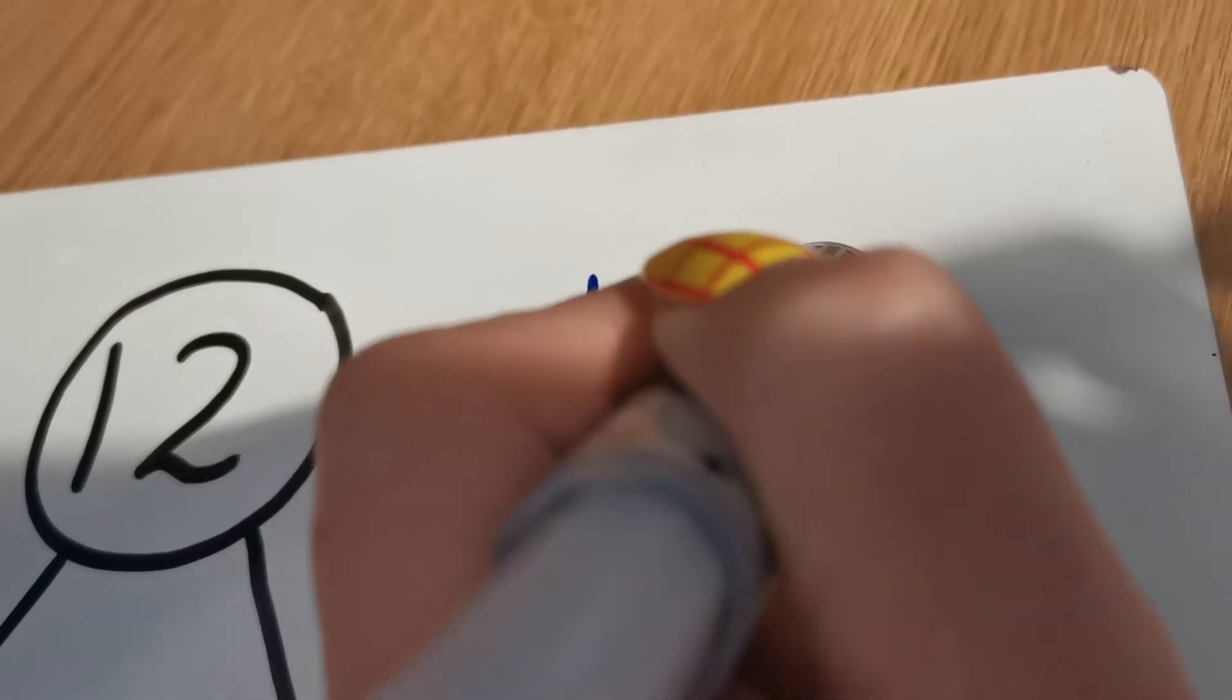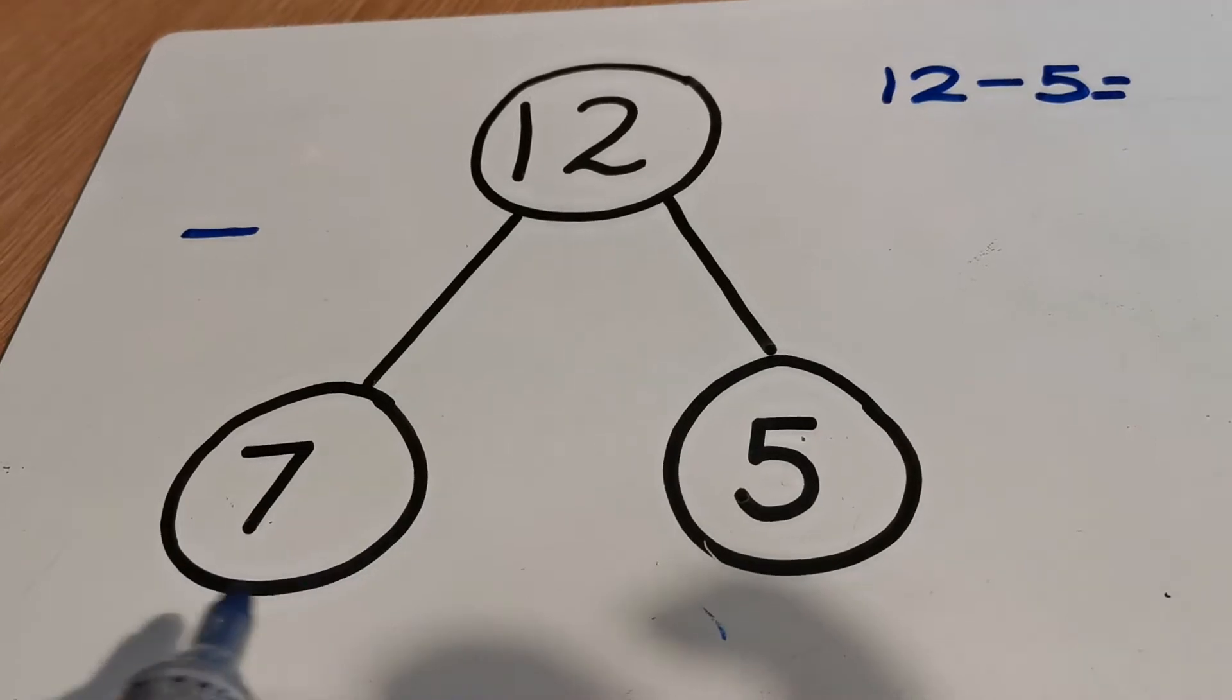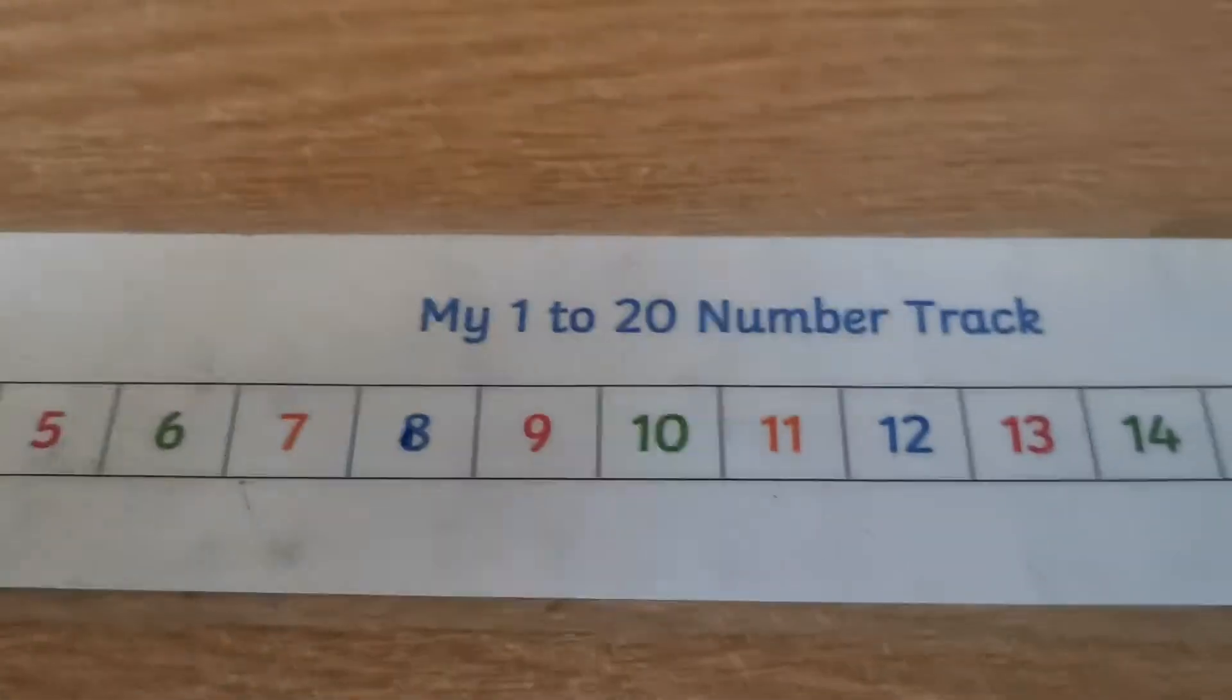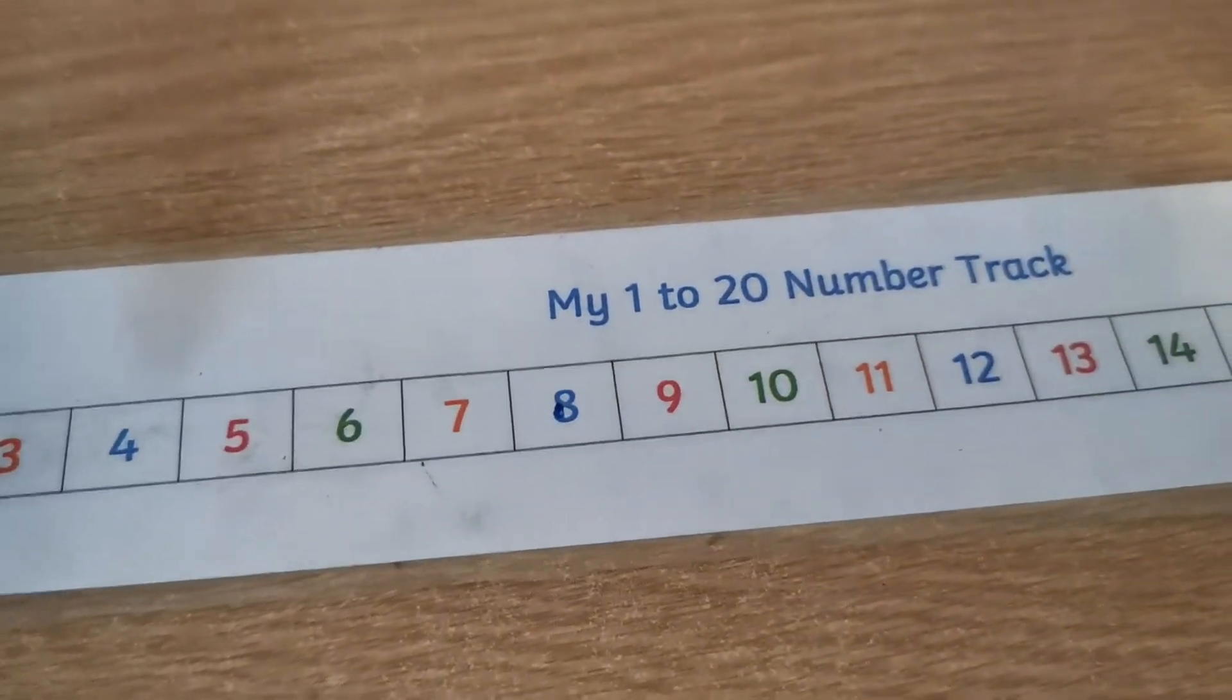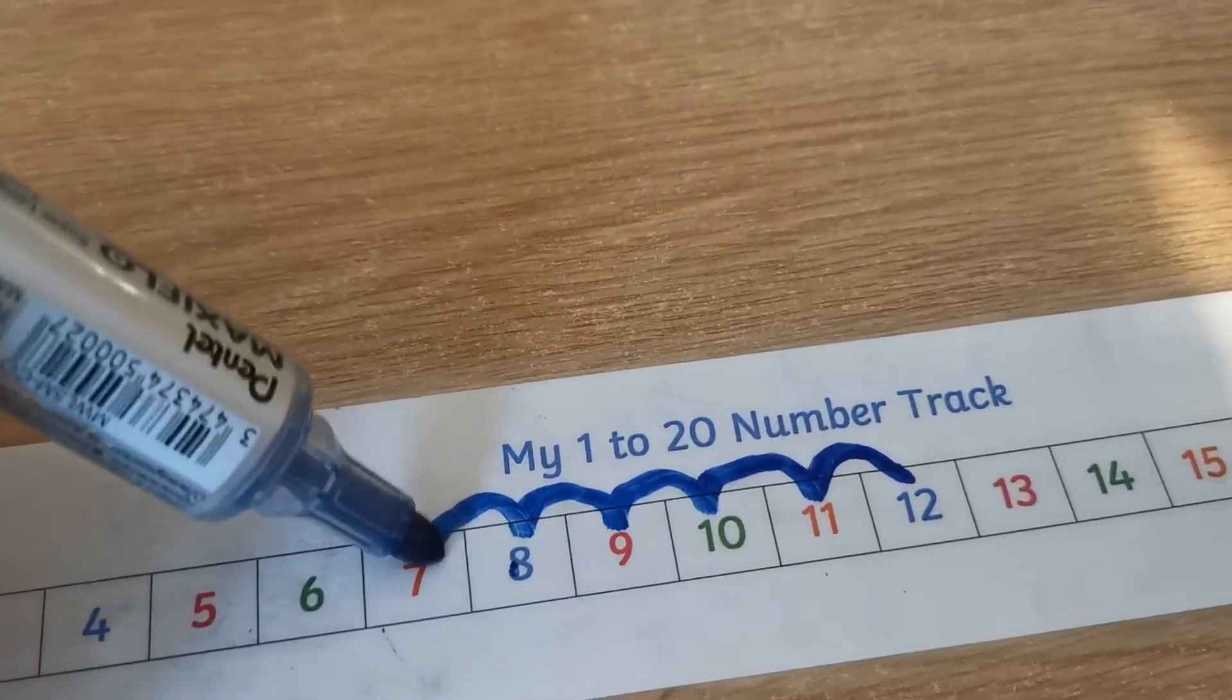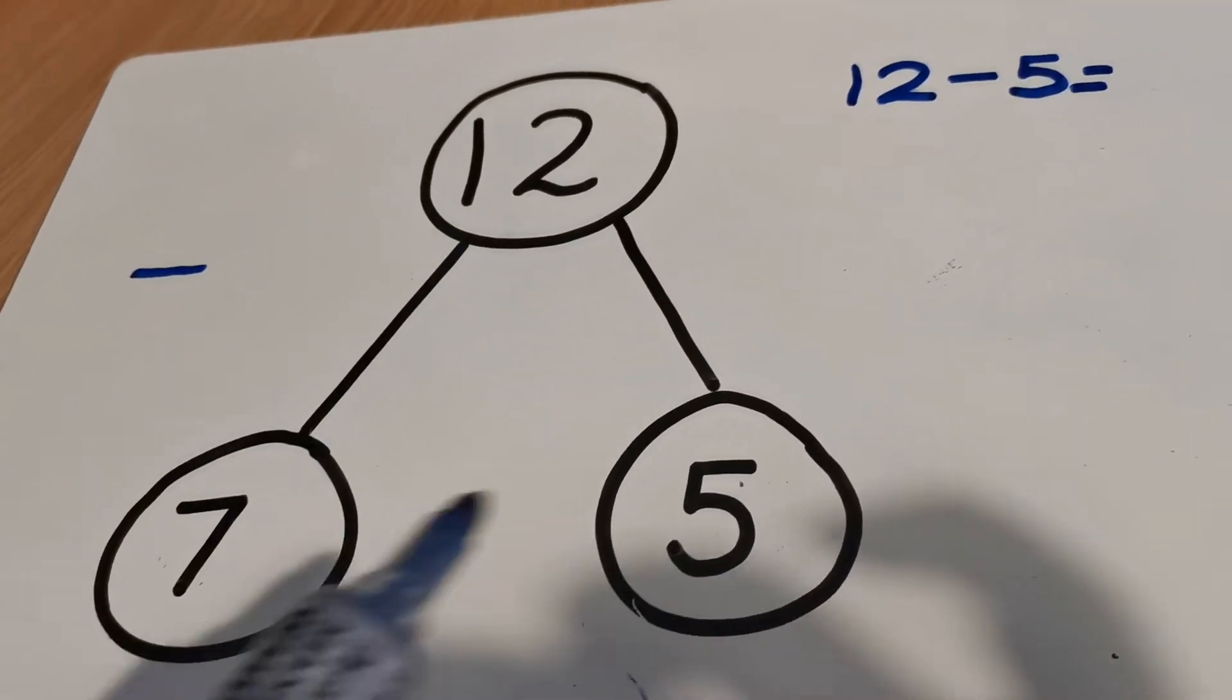And then I'm going to take away one of the parts. Which one shall I choose? I'll choose 5. So I'm going to do 12 take away 5. Now what do you think I'm going to be left with? Do you think 7? Okay, let's check on our number line. I've got a number track here. So I'm going to start at 12 and I'm going to jump back 5. Remember, we're going down towards the smaller numbers because we're taking away. So 12, I'm going to jump back 5, not counting the number I'm on. One, two, three, four, five. Did you expect me to land on 7?